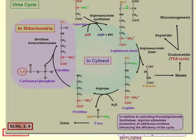The breakdown of arginine reforms the ornithine you started with and produces urea. Arginine is the last step before urea is formed, signaling that there's plenty of nitrogen to get rid of. Arginine stimulates NAG synthetase, and it can also stimulate the production of additional ornithine beyond what it produces in its breakdown, to enhance the urea cycle.